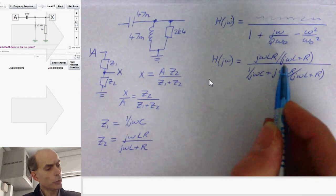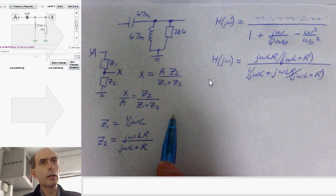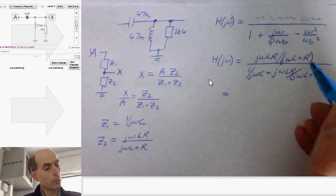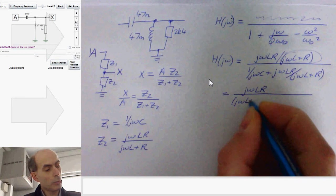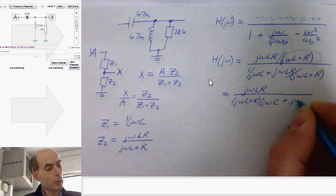Here, that would mean multiplying by jωL plus R and multiplying by jωC. I'll multiply by jωL plus R first. Just multiply top and bottom by this term here, and that would give me jωLR divided by jωL plus R divided by jωC plus jωLR.